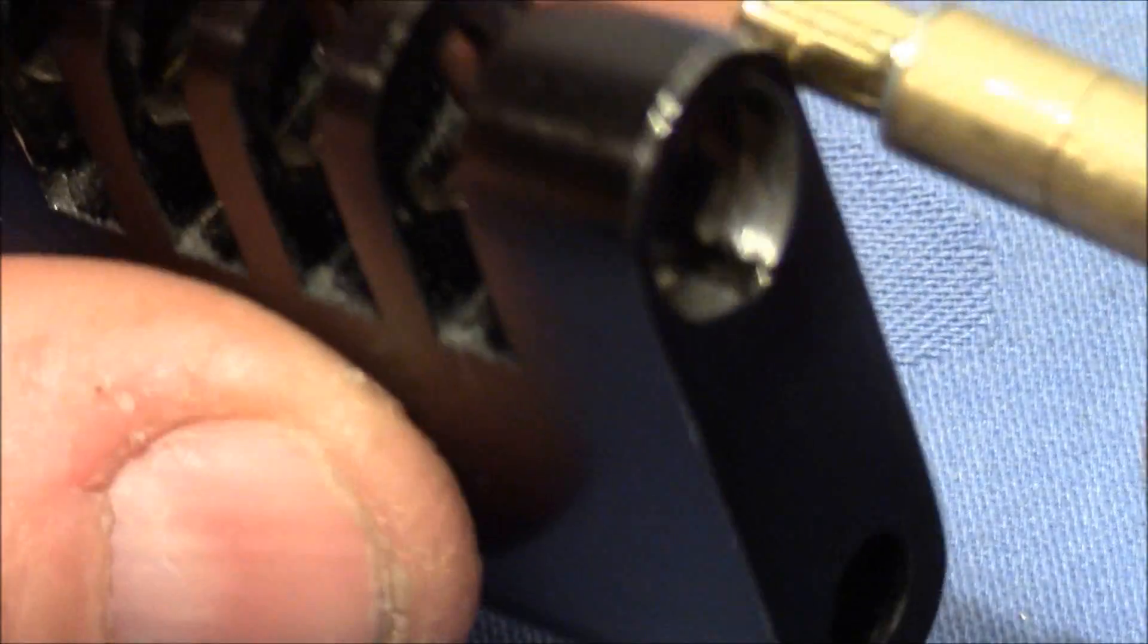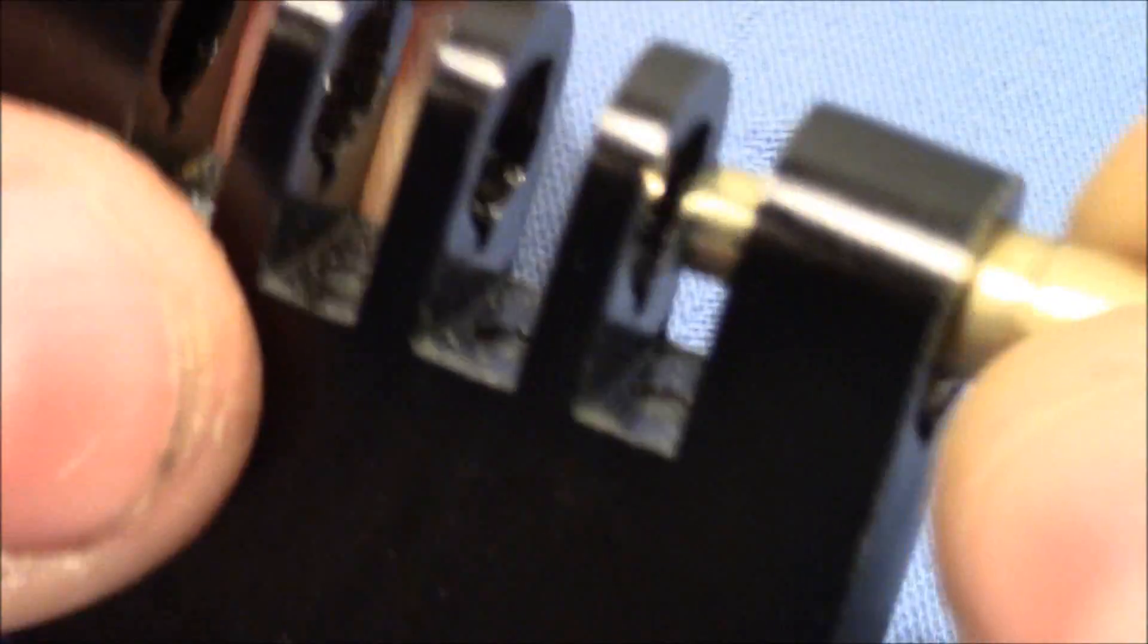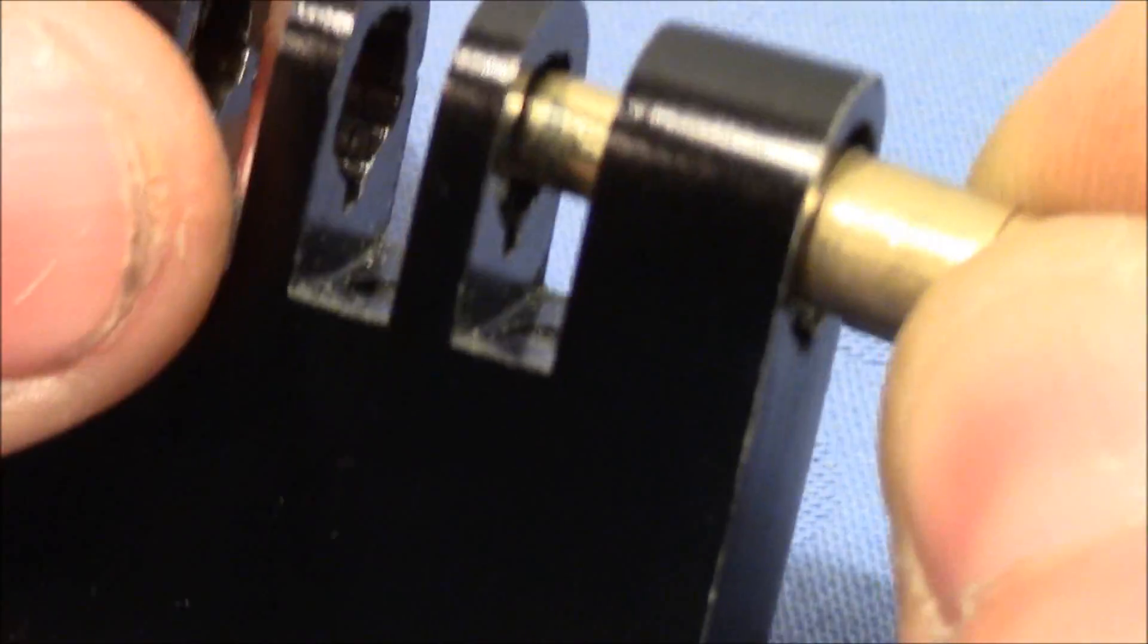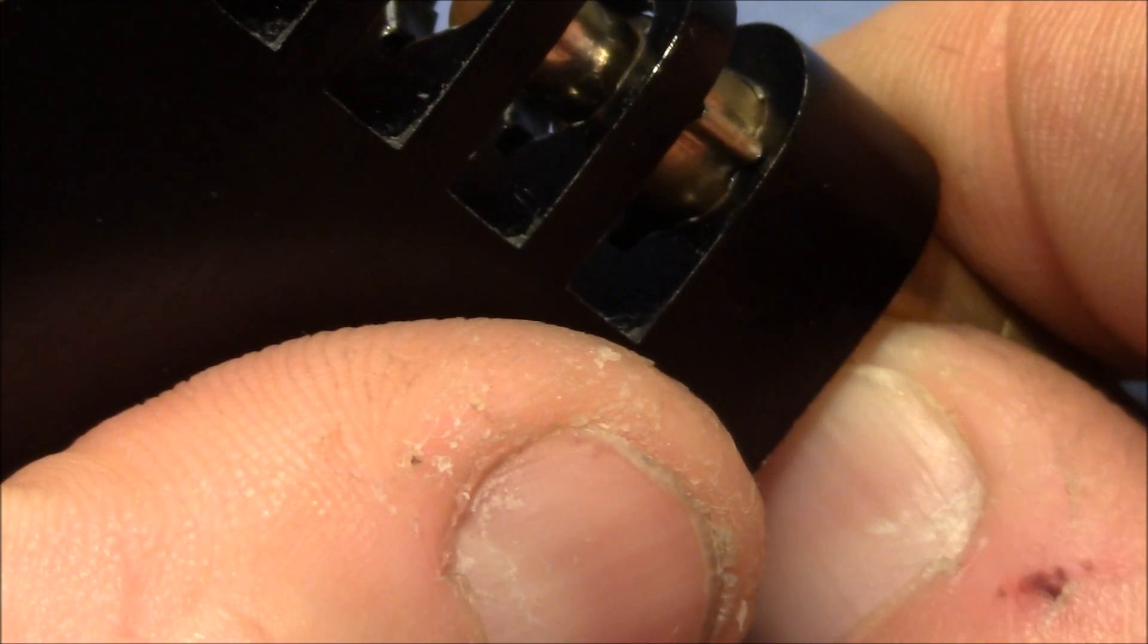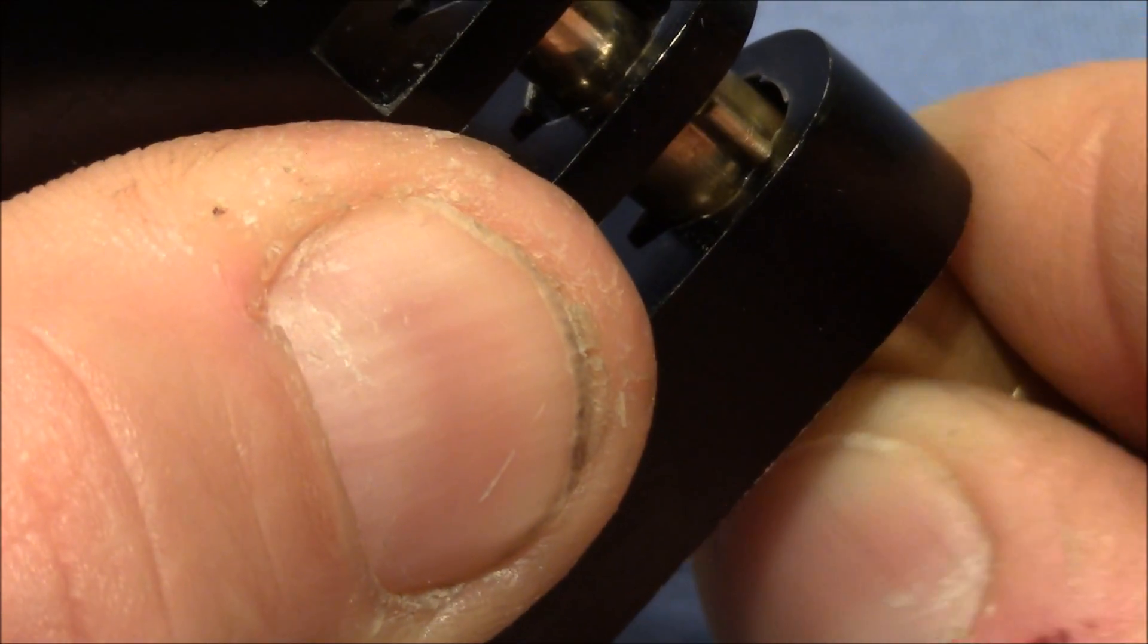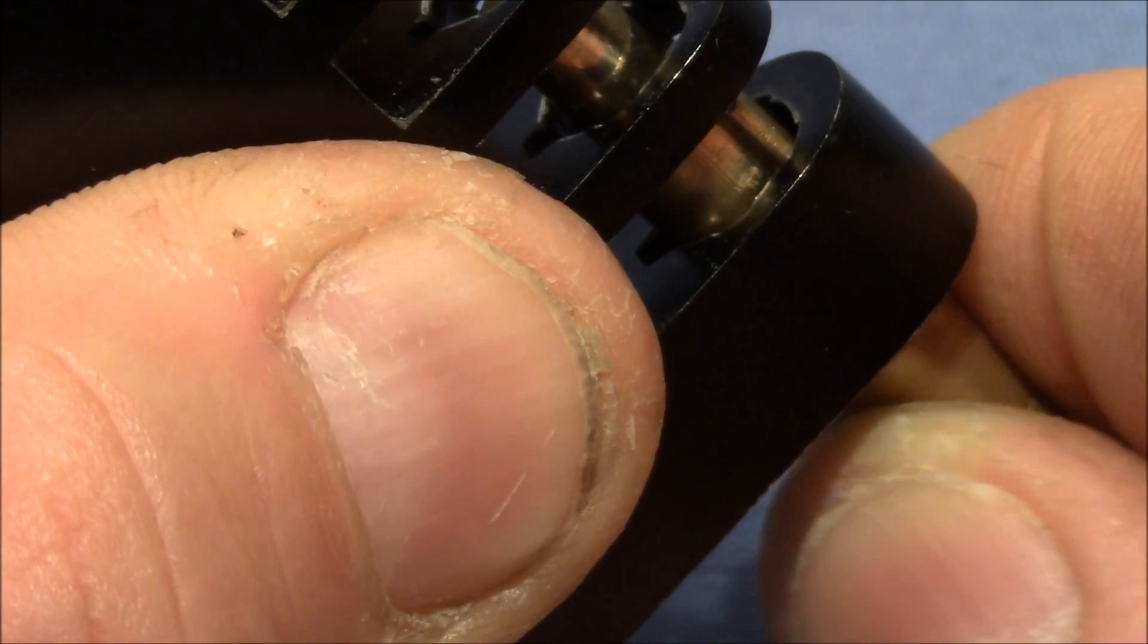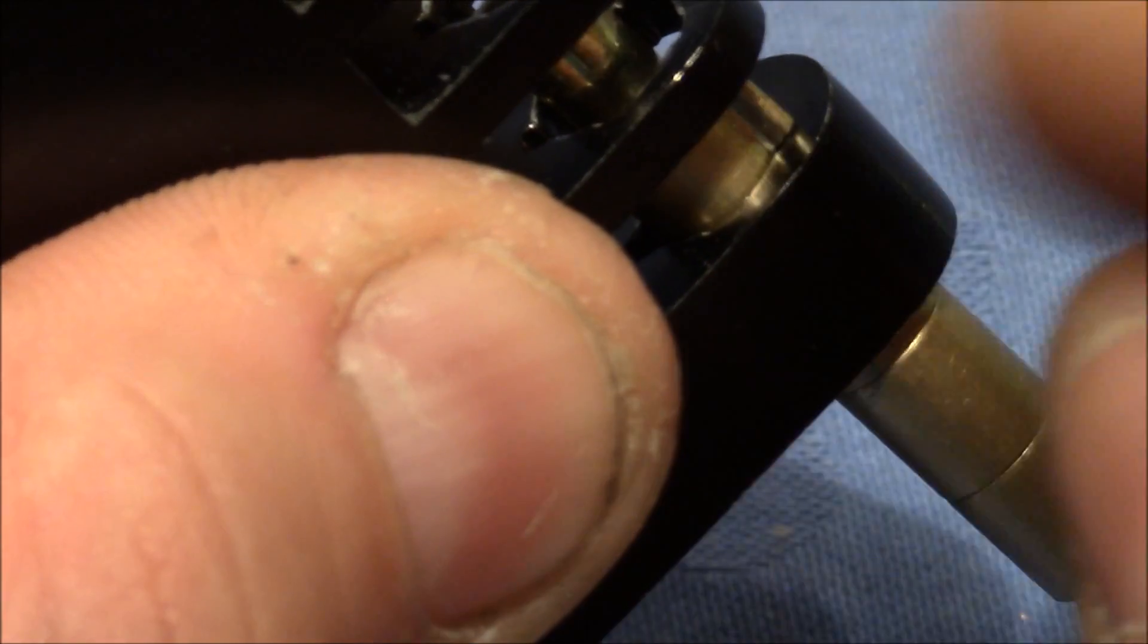Let me quickly reassemble this lock partially to demonstrate what I mean. So now this tooth is between gates and when we pull on the shackle we can feel the resistance of the longer part of the step scratching on the surface.